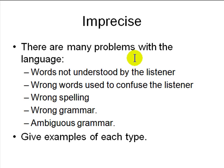There are many problems with language. Words may not be understood by the listener if you use big words — you'll confuse them. Using wrong words that sound like what you intend will also confuse the listener. Wrong spelling is a strict no-no. Grammar must be correct — it's hard to define but easy to spot when wrong. Ambiguous grammar, like where you place a comma, can also cause ambiguity.